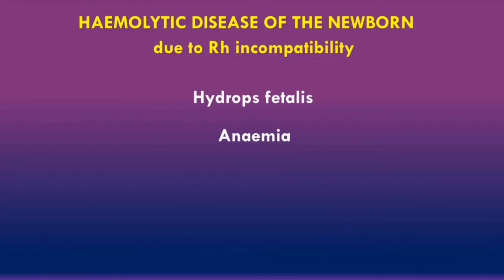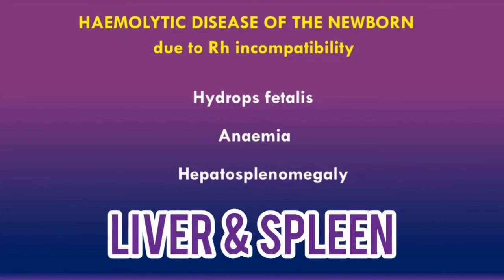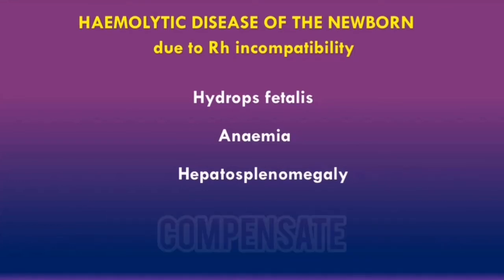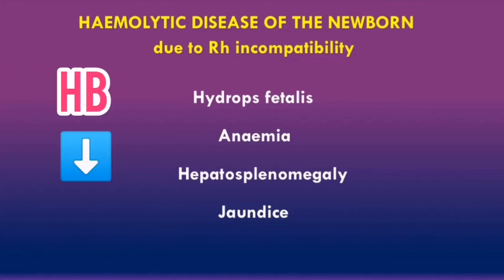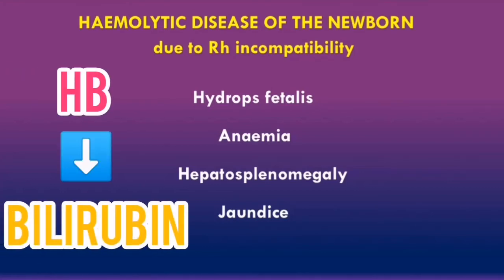Babies can also be born with hepatosplenomegaly. This occurs because the liver and spleen are trying to compensate for all the red blood cells lost due to hemolysis, so they have to work harder to produce more red blood cells. Finally, babies can develop jaundice due to the massive hemolysis, leading to hemoglobin in the red blood cells being metabolized into bilirubin, and this accumulation of bilirubin leads to jaundice.